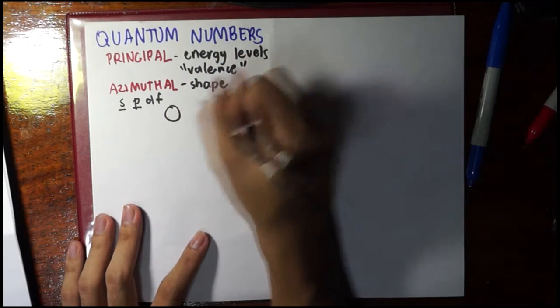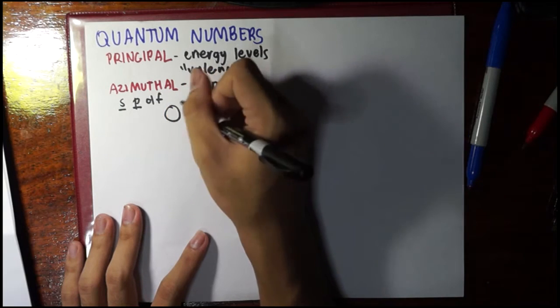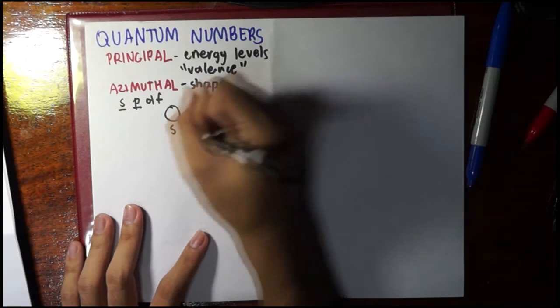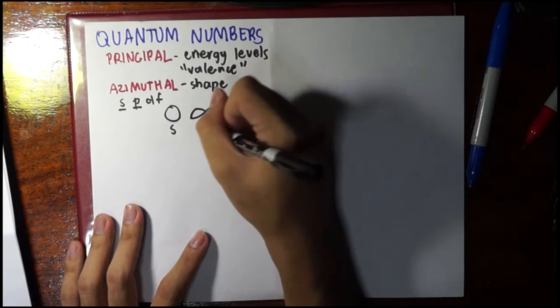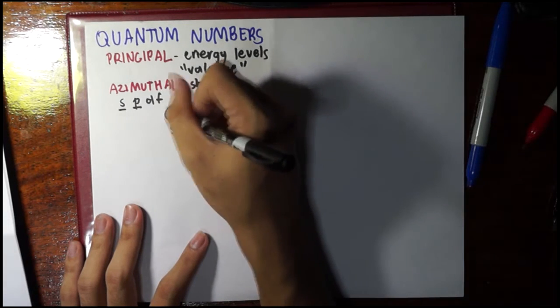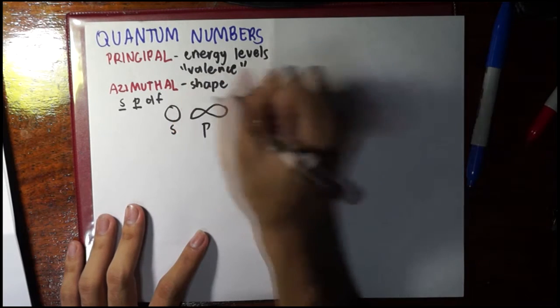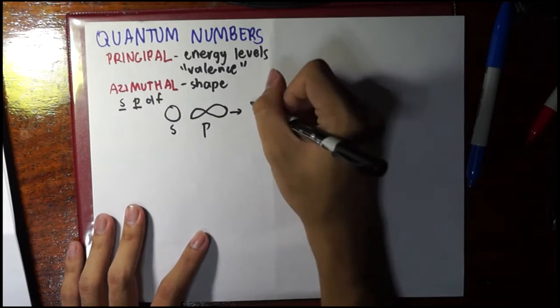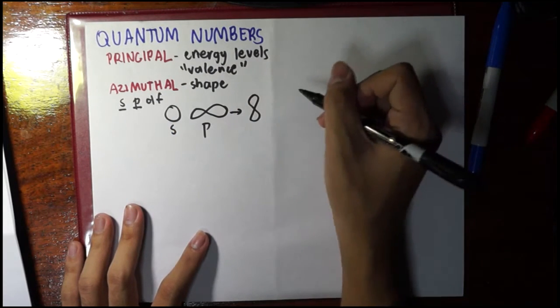This is the shape of the s orbital—it's a simple sphere. The p orbital looks like a dumbbell. The difference is that in s, no matter how you rotate it, it would always look like that. But in p, if you rotate it, it can look like this.